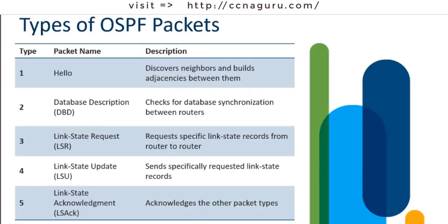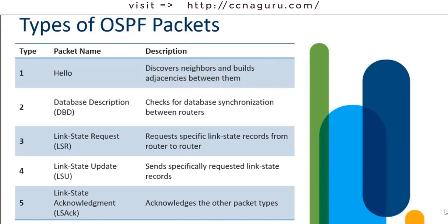Let's jump into OSPF packets and talk about these link state packets. To start off, we have the Type 1 packet, known as the Hello. The Hello is used to establish and maintain adjacencies with other OSPF routers. Your OSPF router says hello to another router on the link to discover neighbors and build adjacencies, which are also used as keepalives to keep track of the neighboring router.